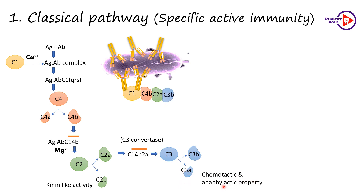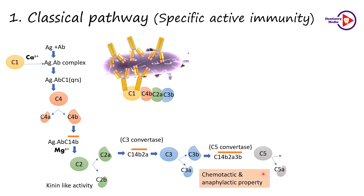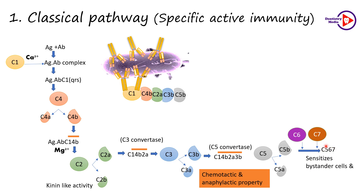C3A has chemotactic and anaphylactic properties and is released into the plasma. C3B is the larger fragment which joins the cascade to form the compound called C5-convertase. The membrane attack phase begins with the formation of the C5-convertase, which splits C5 into C5A and C5B. C5A has chemotactic and anaphylactic properties similar to C3A, and the bigger molecule C5B joins the cascade, which further combines with C6 and C7 to form the C5B67 molecule. This molecule amplifies the reaction by getting absorbed to adjacent bystander cells, thereby making them susceptible to lysis by C8 and C9. Also, a smaller amount gets attached to the bacterial cell membrane, preparing them for lysis by C8 and C9.